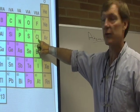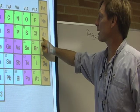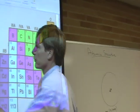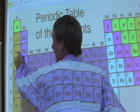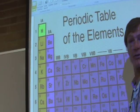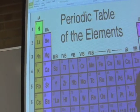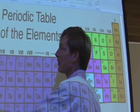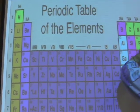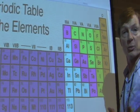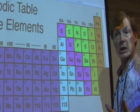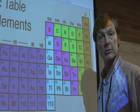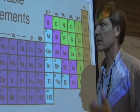Chlorine is one electron short of filling its shell. Sodium has one extra electron — it's starting a new shell. If it could share that electron somehow, the shells would be filled. Or if it could just donate that electron to chlorine, then their shells would be filled. So if you put them in solution, that's NaCl — sodium chloride. That's salt. That's how chemistry works.